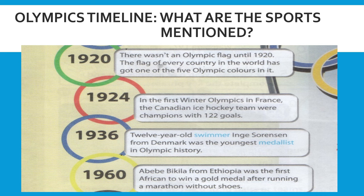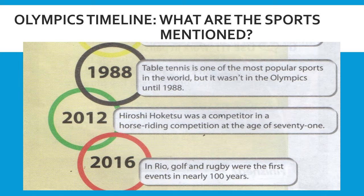In 1960, Abibi Bekela from Ethiopia was the first African to win a gold medal after running a marathon without shoes. In 1988, table tennis is one of the most popular sports in the world, but it wasn't in the Olympics until 1988. In 2012, Hiroshi Hokusu was a competitor in a horse riding competition at the age of 71. And in 2016, in Rio, golf and rugby were the first events in nearly 100 years.